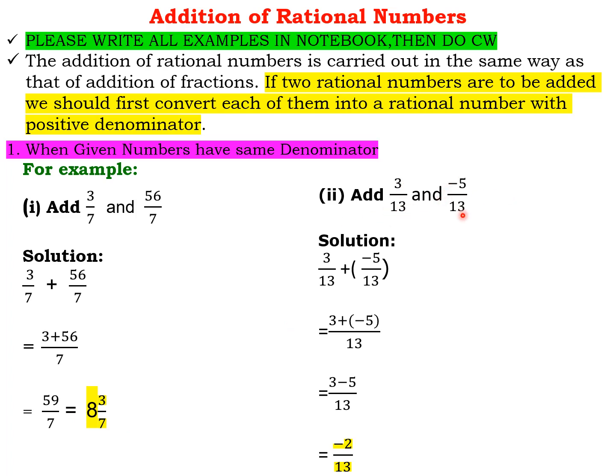Second one is add 3/13 and minus 5/13. So 3/13 plus in the bracket minus 5/13. Since both the denominators are the same, we get 3 plus minus 5 by 13. Plus into minus will be minus, so 3 minus 5 by 13. 3 minus 5 is minus 2. So the final answer is minus 2/13.